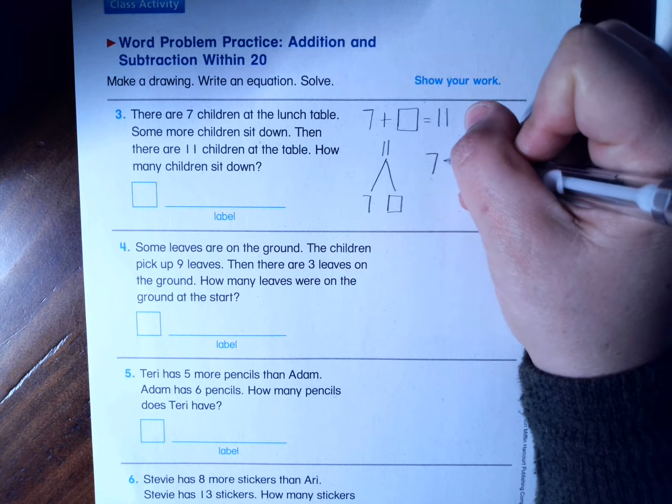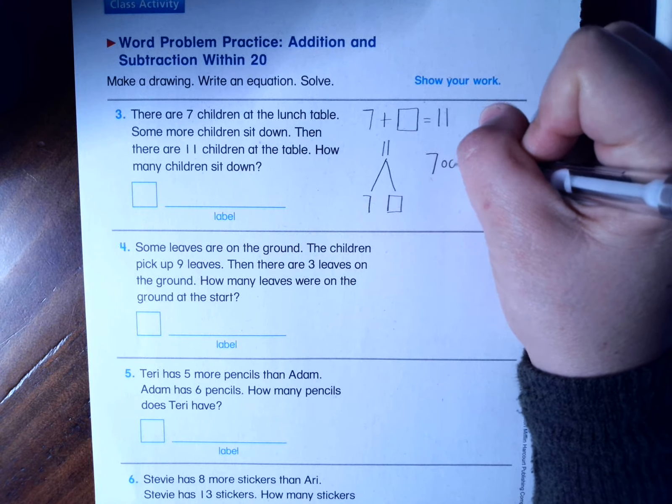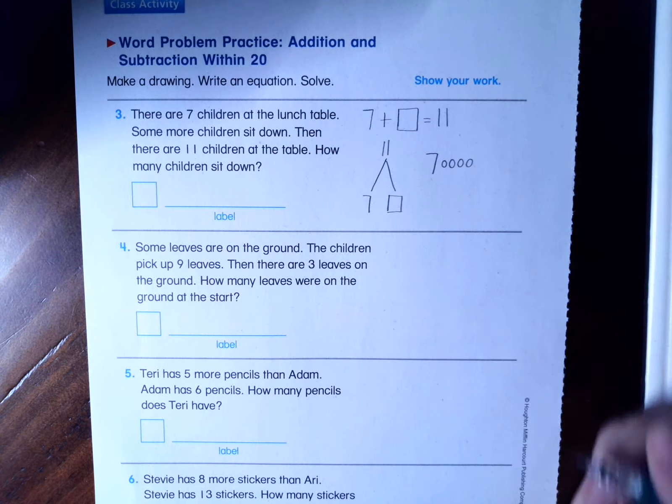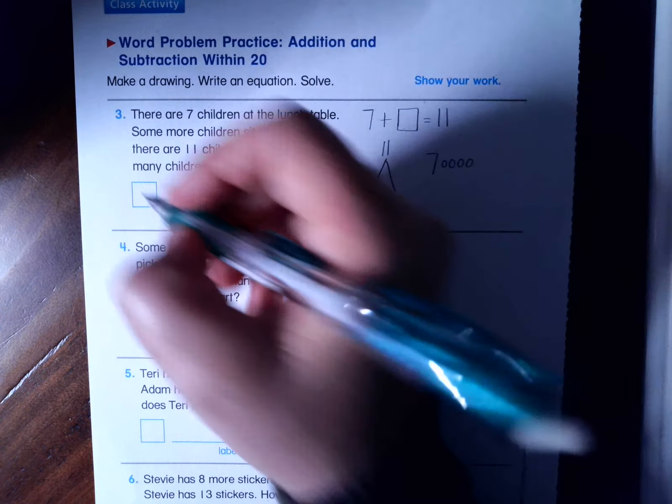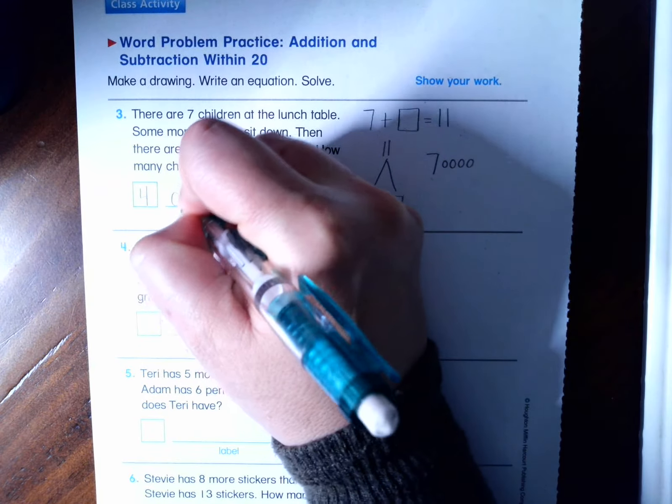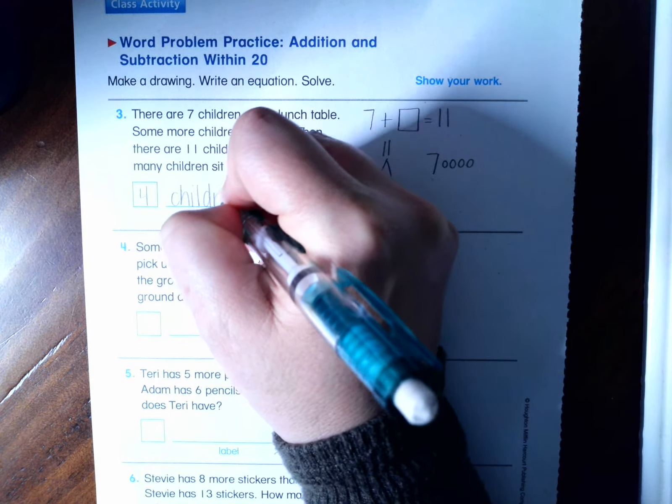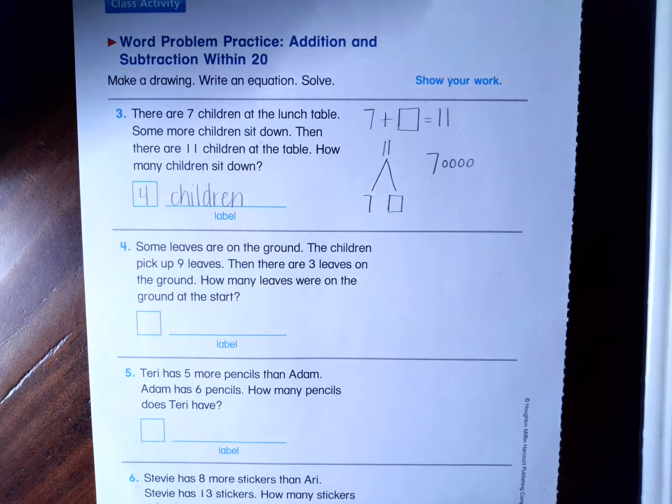If I have the number seven, I'm going to count up eight, nine, 10, 11. There's my picture. And it also shows me my answer of four. Four children.